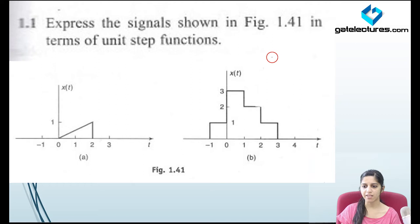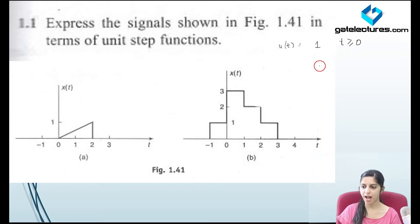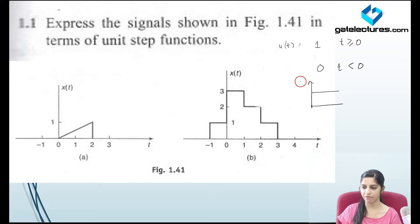Look at the first question now. They are asking you to represent the given signals in terms of unit step function. We are going to look at unit step function first. This is how we define unit step function: it has value 1 for all values of t greater than or equal to 0, and value 0 for all values of t less than 0. This is how we represent unit step function graphically.